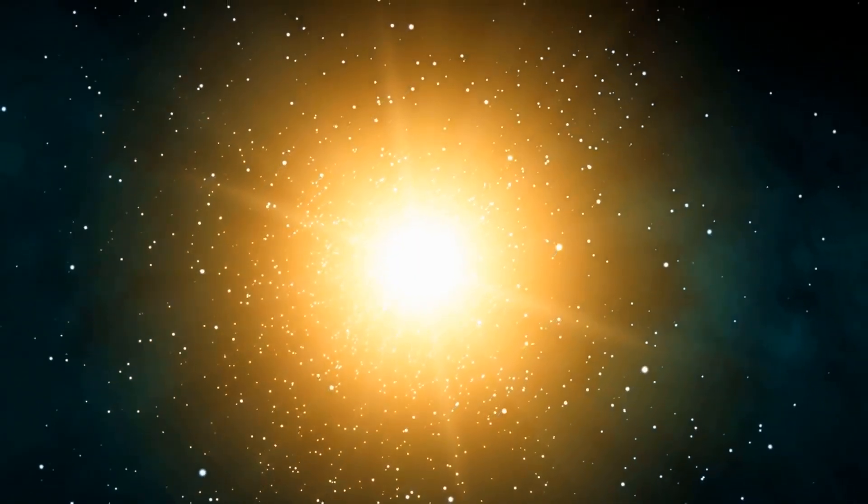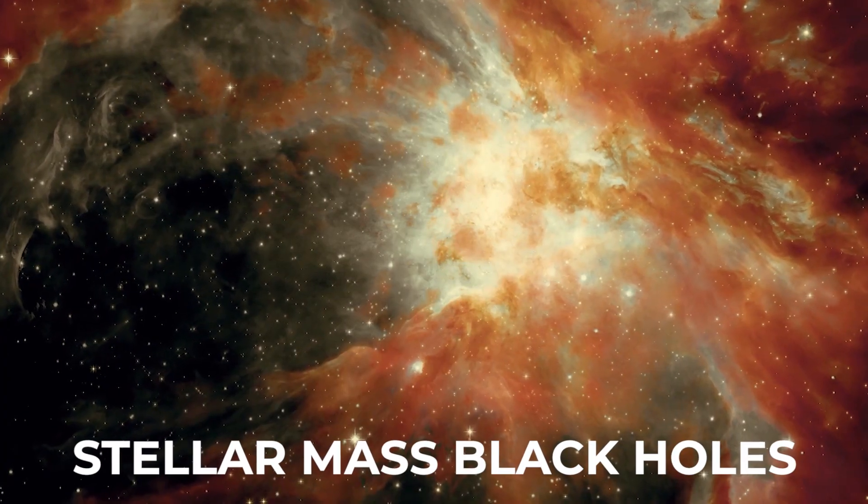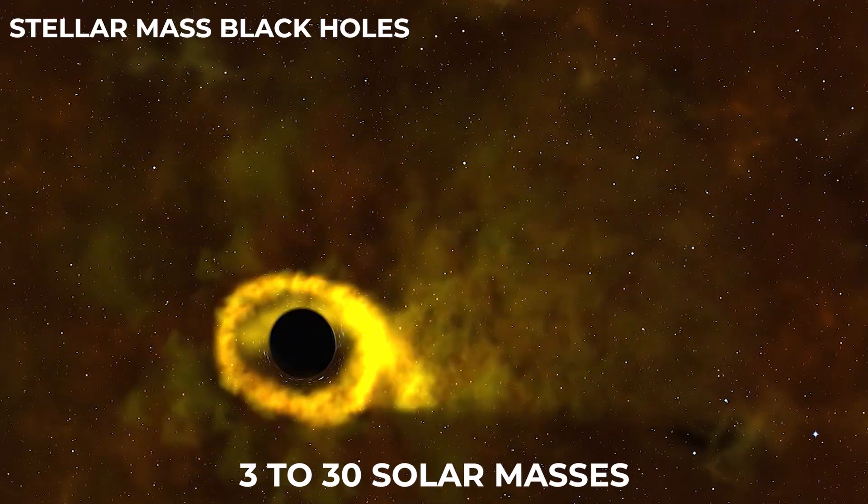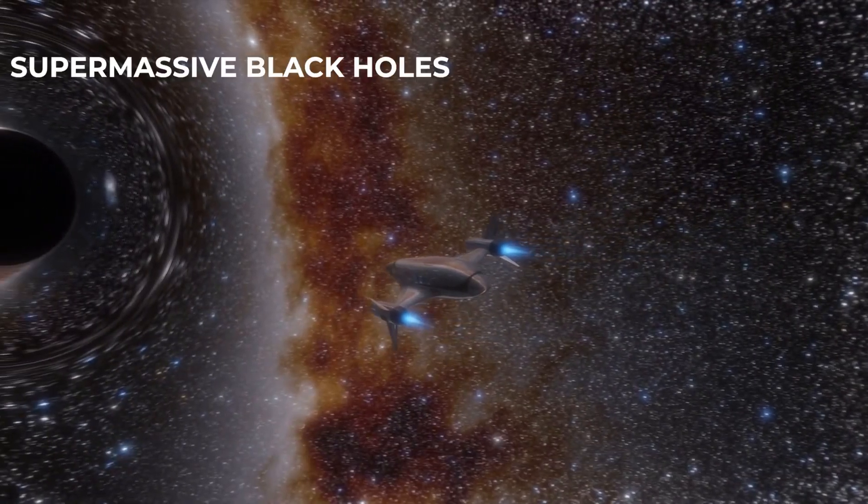The study of black holes is a vibrant and fast-moving field. From the study we know that there are two types of black holes: stellar mass and supermassive. Stellar mass black holes form when the core of a massive star collapses and these range from three to thirty solar masses, while the supermassive black holes form in the center of galaxies where they grow by swallowing stars, gas, and dust.